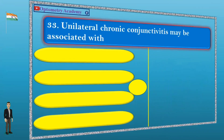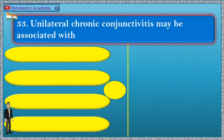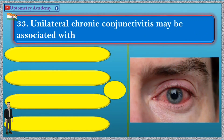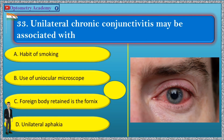Question 33. Unilateral chronic conjunctivitis may be associated with: A. Habit of smoking, B. Use of uniocular microscope, C. Foreign body retained in the fornices, D. Unilateral aphakia.